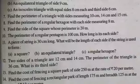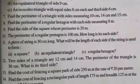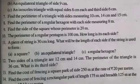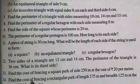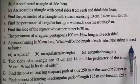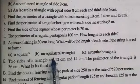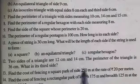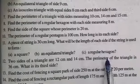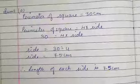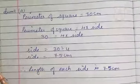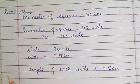What is given in the question is that the piece of string is 30 centimeters long. If the string is used to form a square, what will be the length of each side? If used as an equilateral triangle, what will be the length of each side? And if used in the form of a regular hexagon, what will be the length of each side?